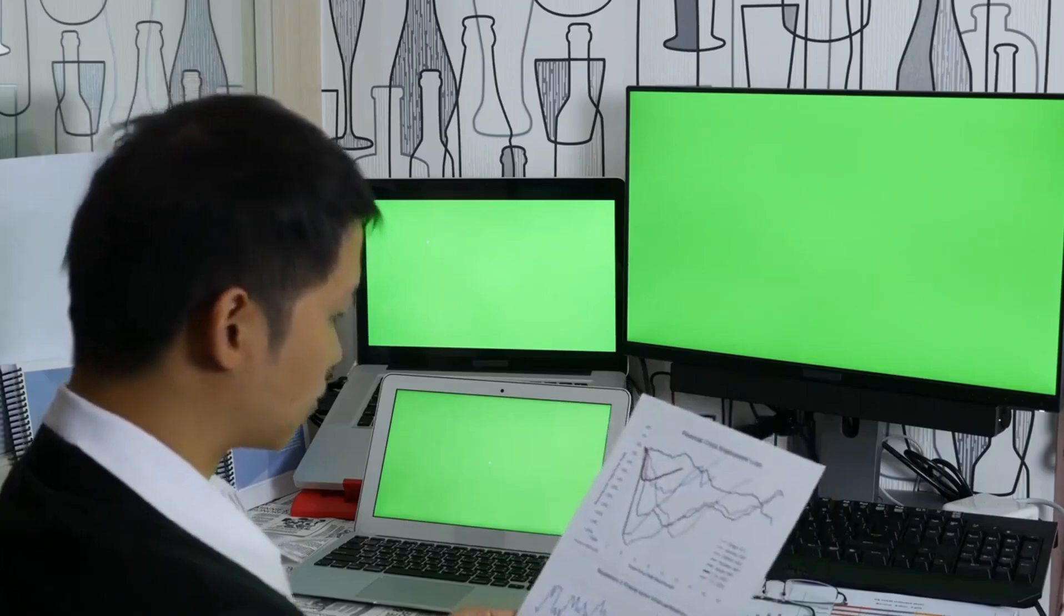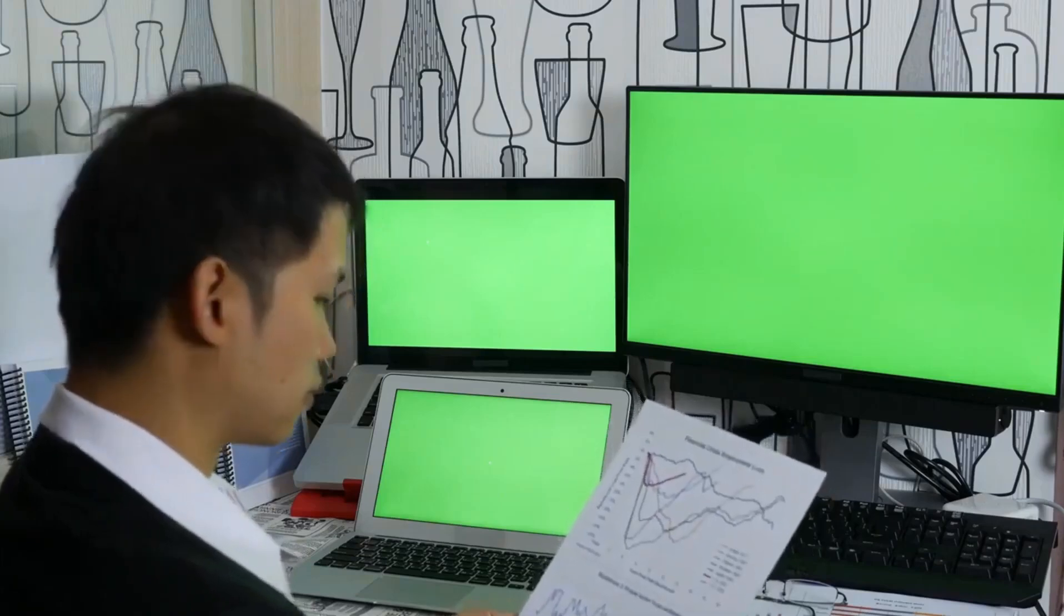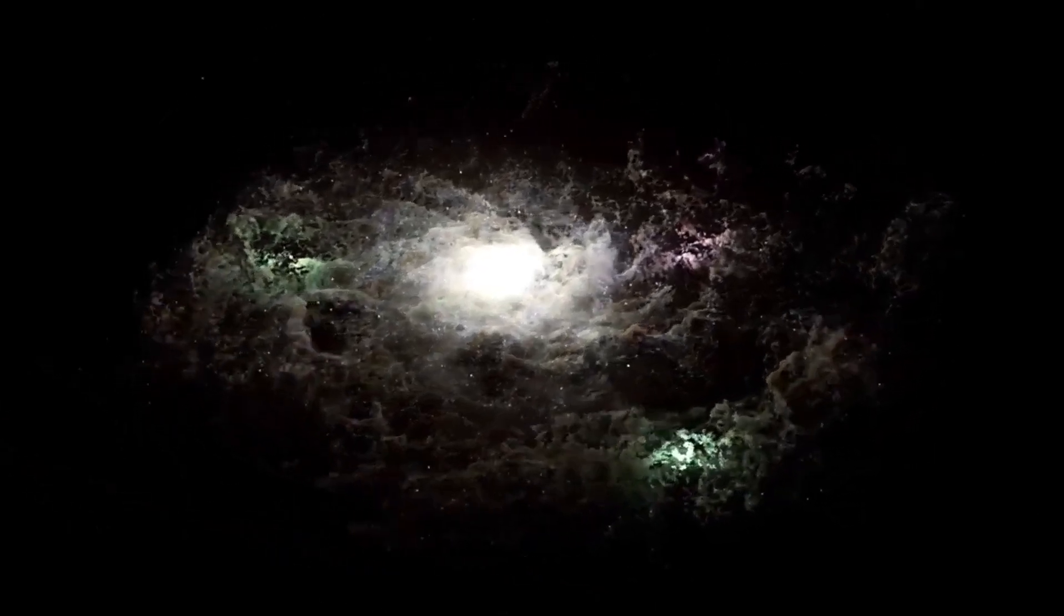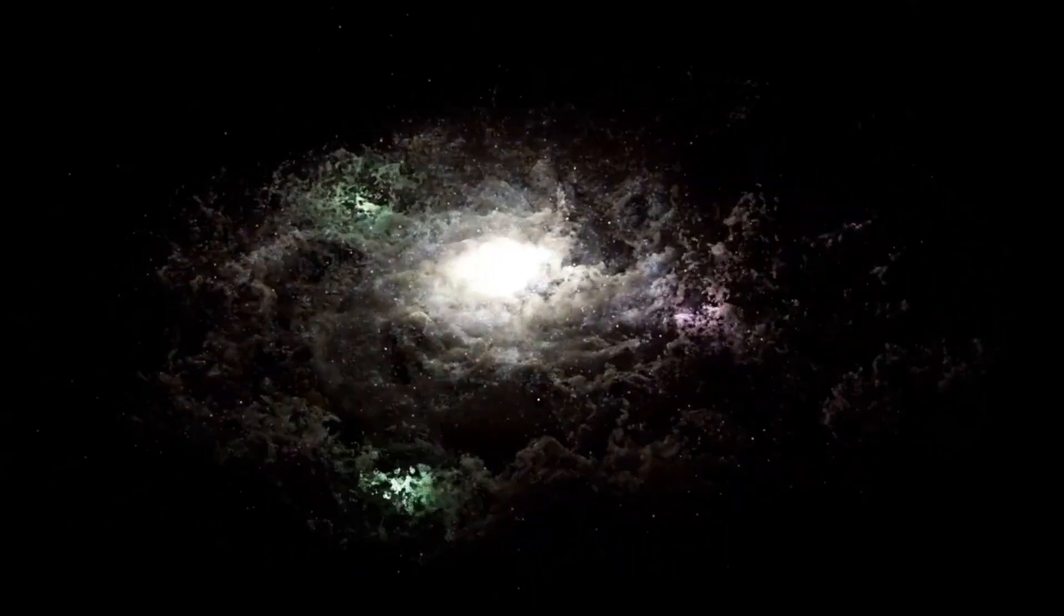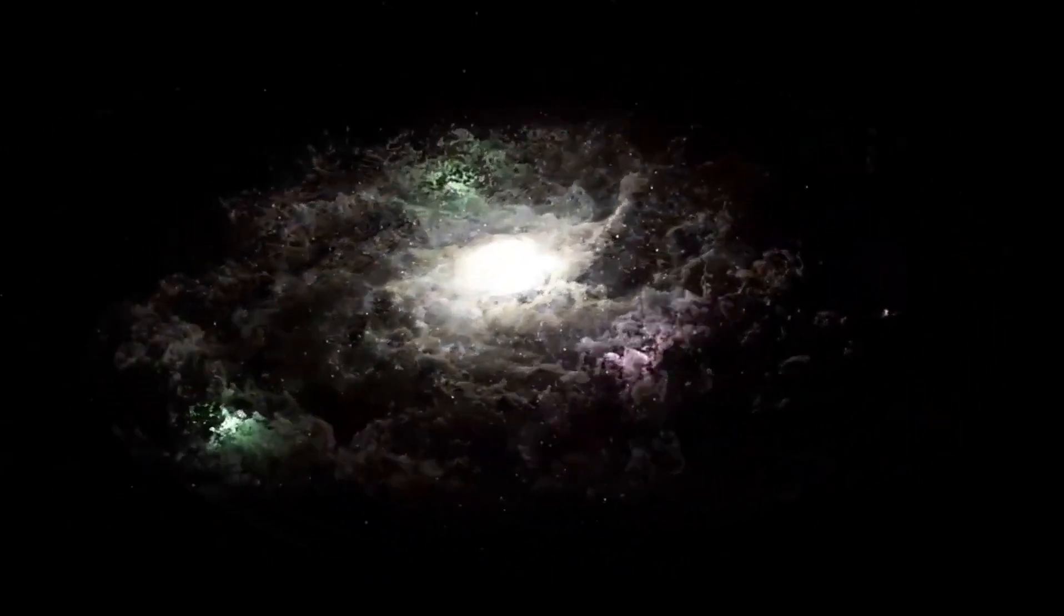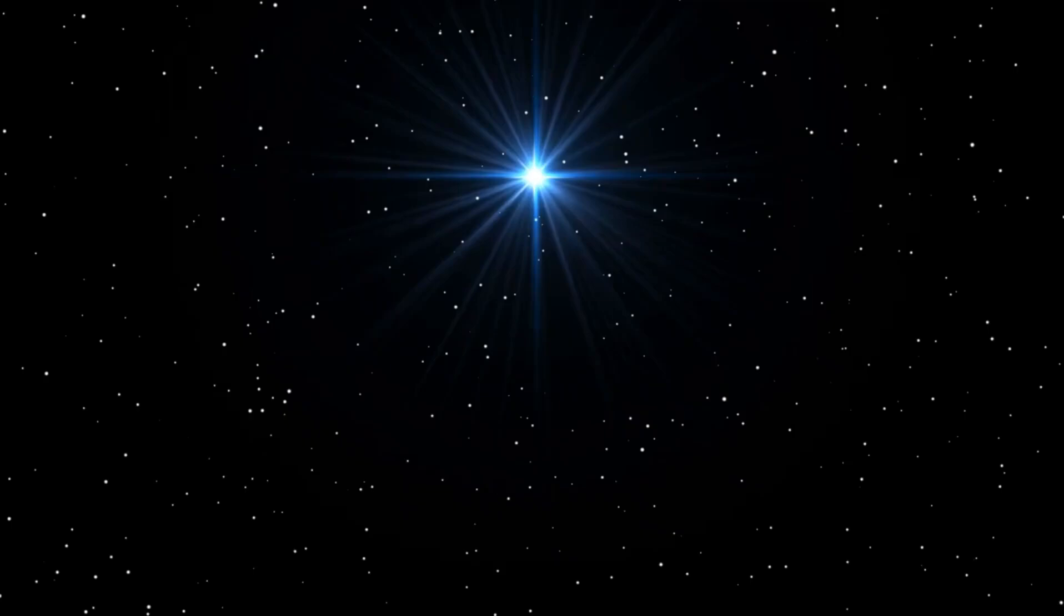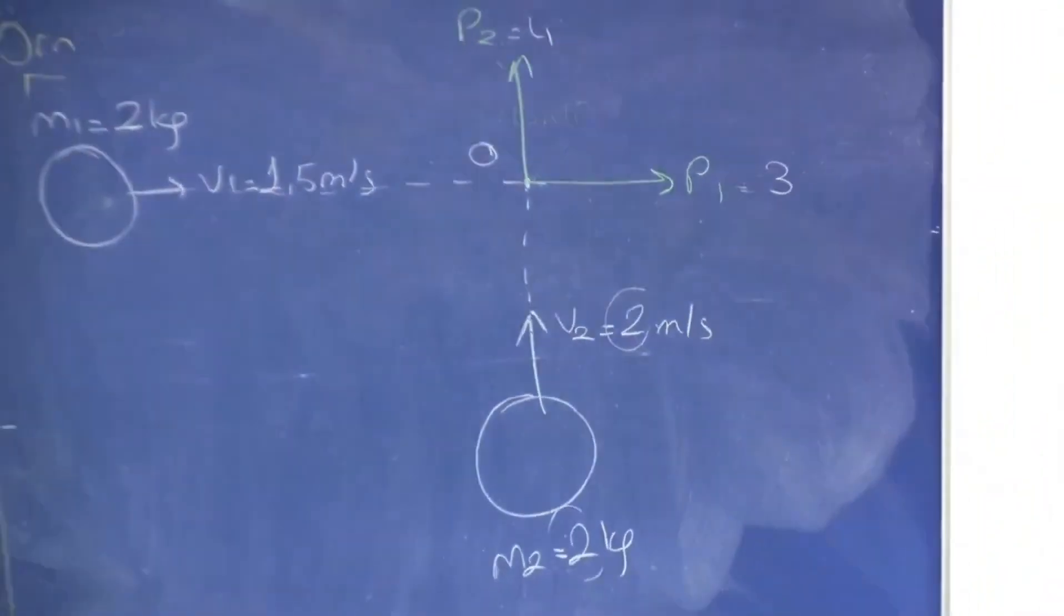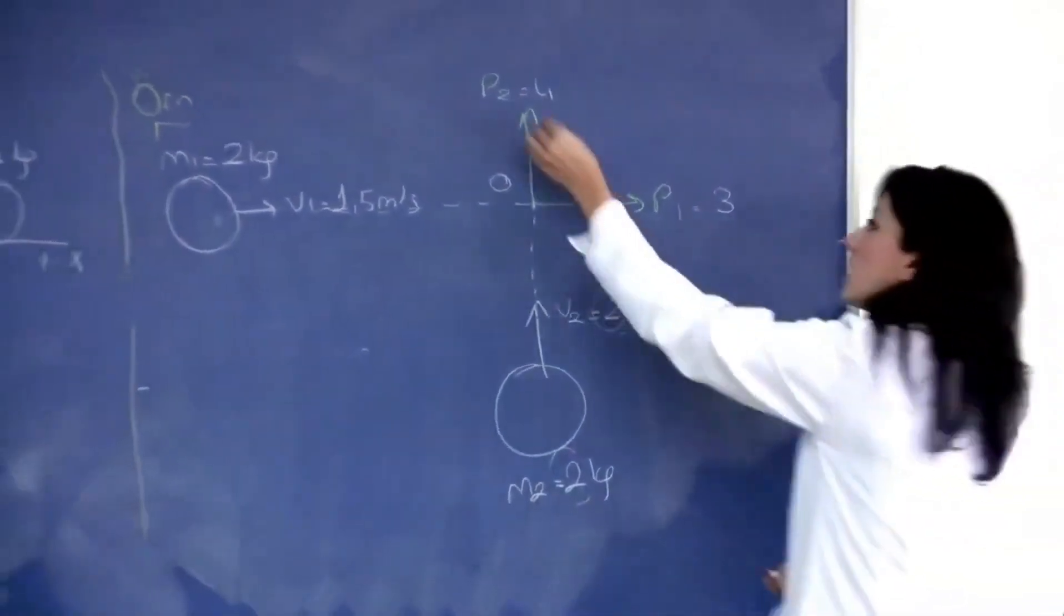In the meantime, Betelgeuse remains a beacon in the night sky, a reminder of the vastness and mystery of the cosmos. For those in the southern hemisphere, the star is easily visible at dusk, shining brightly on the shoulder of Orion. Even in the northern hemisphere, Betelgeuse can be seen as the days grow shorter, a fiery red that captures the imagination and inspires wonder. As we watch and wait for the next chapter in Betelgeuse's story, we are reminded that the universe is full of surprises, and that the next great discovery is always just beyond the horizon.